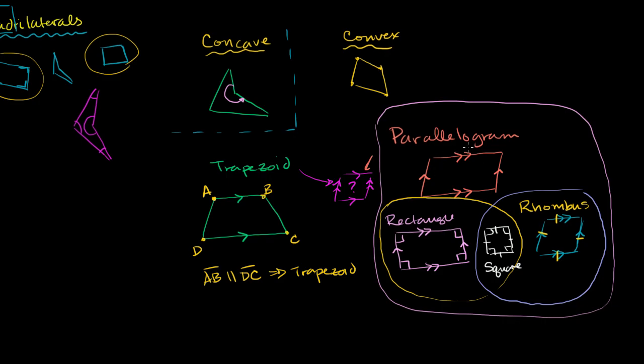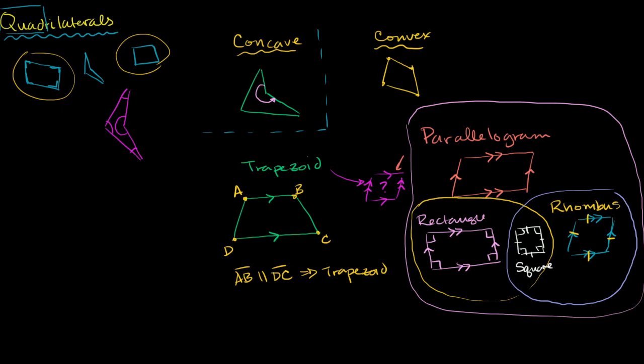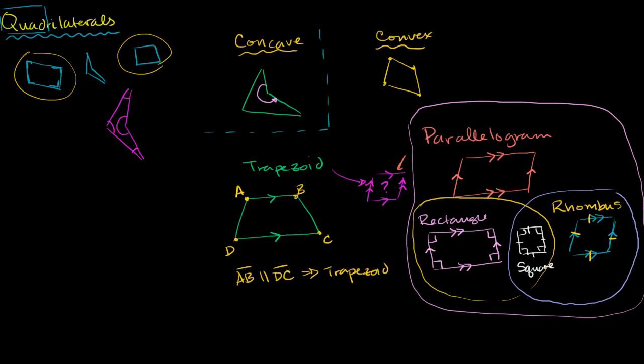This one right over here is neither a rectangle, nor a rhombus, nor a square. So that's an overview that gives you a little bit of taxonomy of quadrilaterals. In the next few videos, we can start to explore them and find their interesting properties, or just do interesting problems involving them.